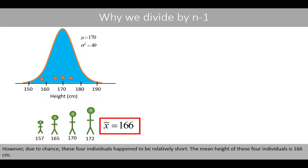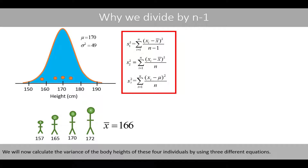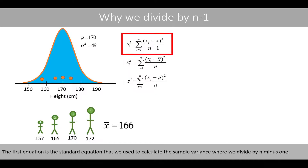However, due to chance, these four individuals happen to be relatively short. The mean height of these four individuals is 166 centimeters. We'll now calculate the variance of the body heights of these four individuals by using three different equations. The first equation is the standard equation that we use to calculate the sample variance when we divide by n minus 1.